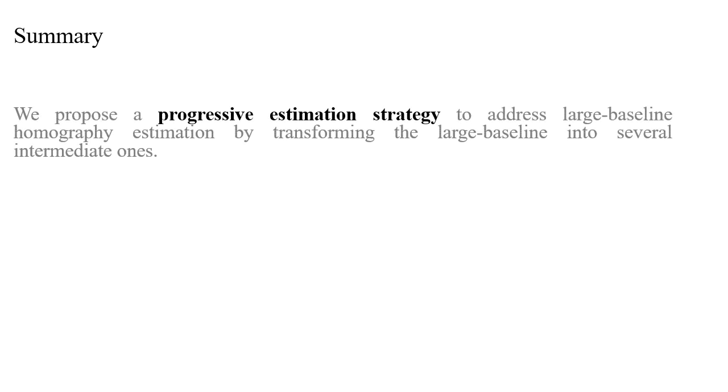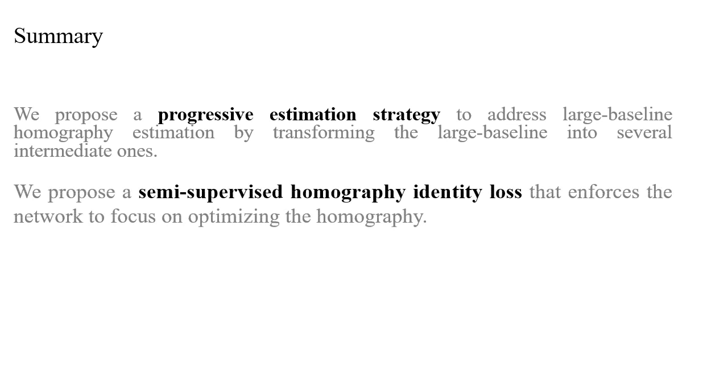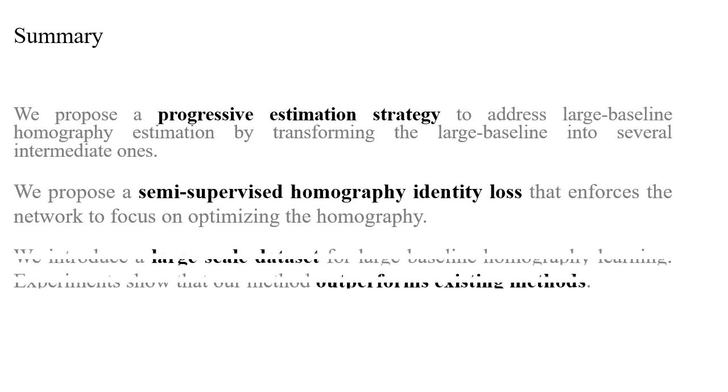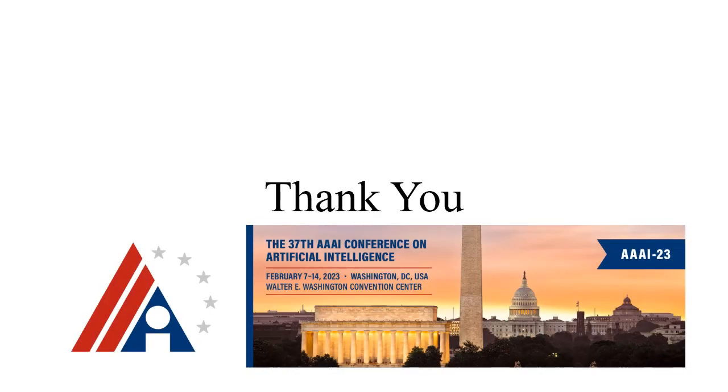To summarize, we propose a progressive estimation strategy to address large baseline homography estimation by transforming the large baseline into several intermediate ones. We propose a semi-supervised homography identity loss that enforces the network to focus on optimizing the homography. We introduce a large-scale dataset for large baseline homography learning. Experiments show that our method outperforms existing methods. Thank you very much.